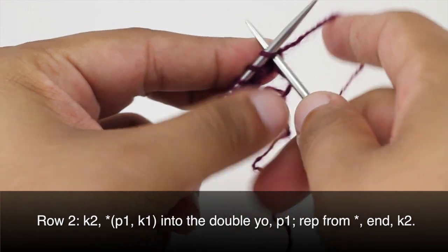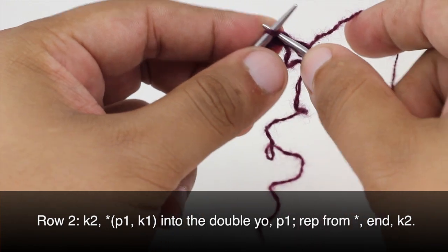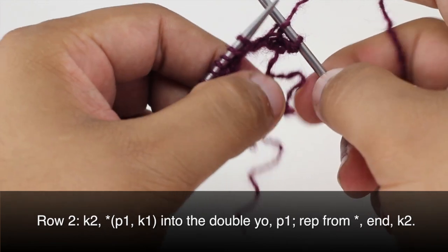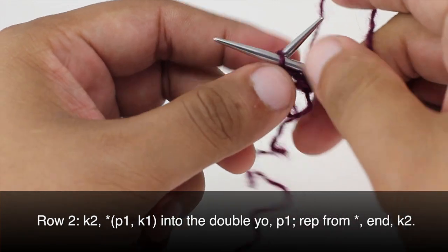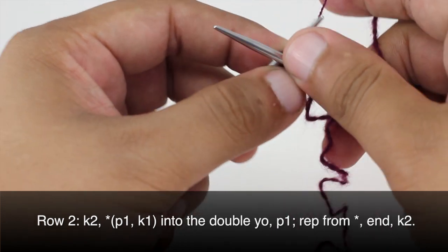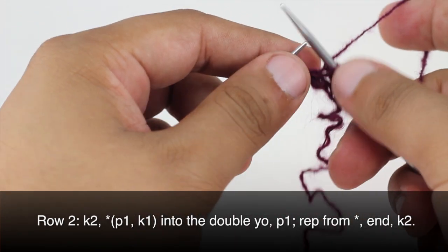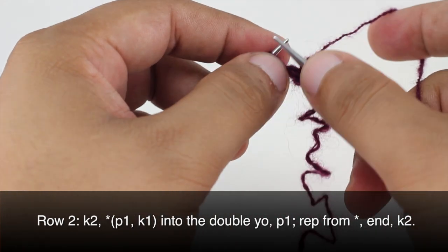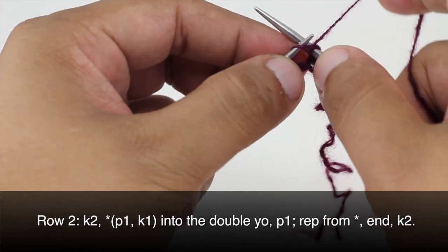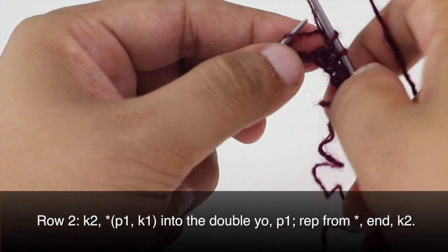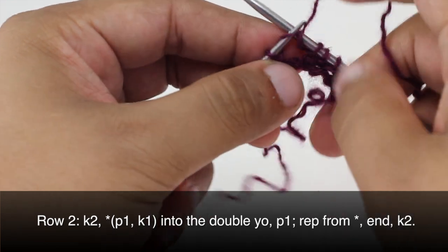Row 2. We are going to begin by knitting 2. Then we are going to start our repeat by purling 1, then knitting 1, then purling 1. That is into that double yarn over that we did.